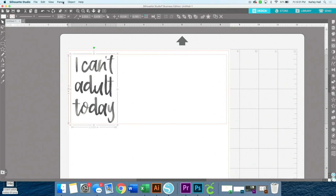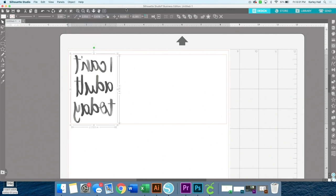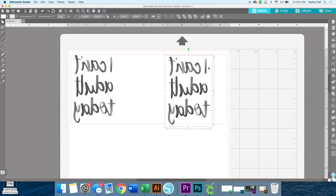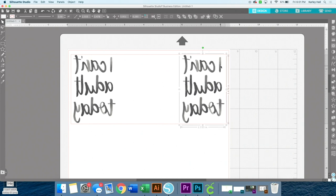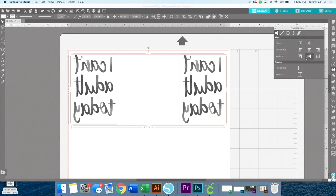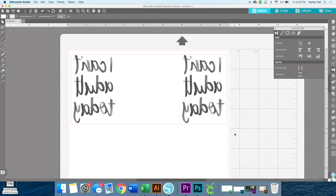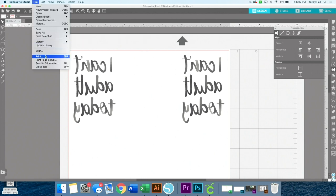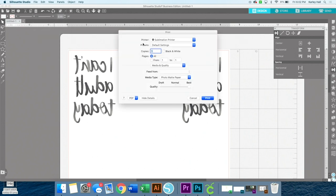Put that onto your Silhouette Studio mat and then resize it to however big or small you want. Of course, you don't have to use this image. You can use any image you want for this project. Once you get it to be the size that you want, you can mirror your object. Since we are going to be printing it out, we need to mirror it when we apply it.